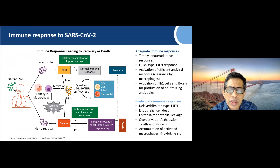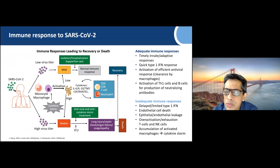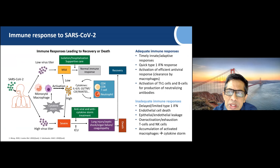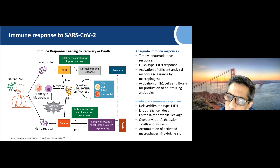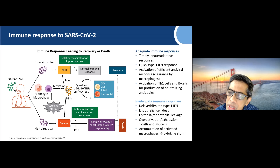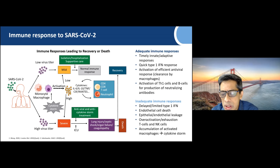When SARS-CoV-2 is contained, there is an adequate immune response — timely innate and adaptive response with type 1 interferon response, efficient clearance by macrophages, and activation of Th1 cells and B cells making neutralizing antibodies. This happens in 80 to 85 percent of people. However, in people with comorbidities or severe disease, there is an inadequate immune response where type 1 interferon is delayed or limited, causing endothelial and epithelial cell death, overactive and exhausted T cells and NK cells, and an activated macrophage accumulation with cytokine storm and death.